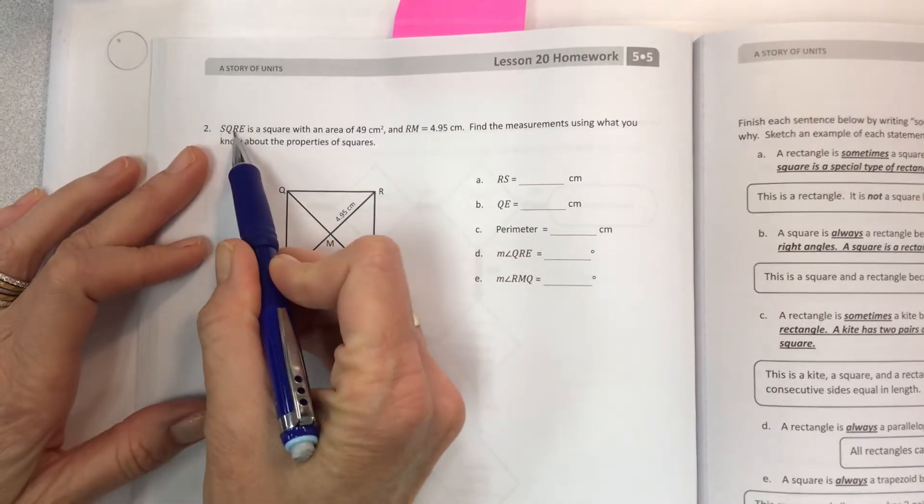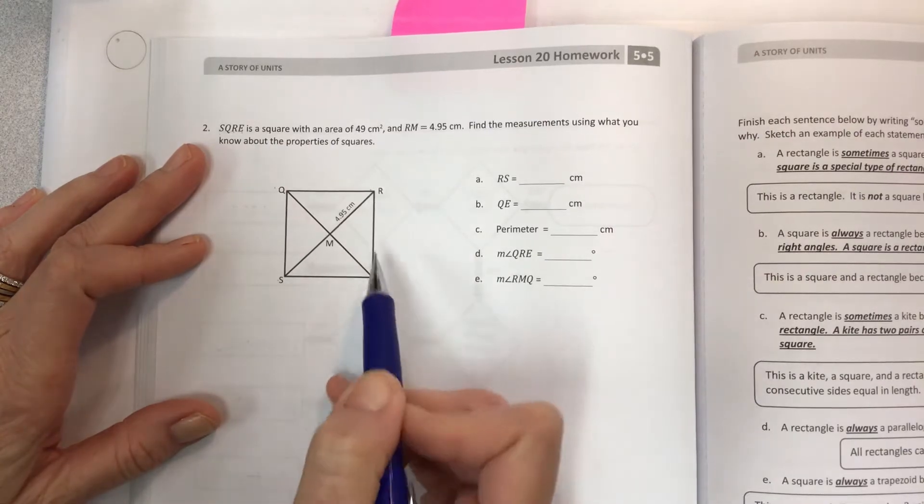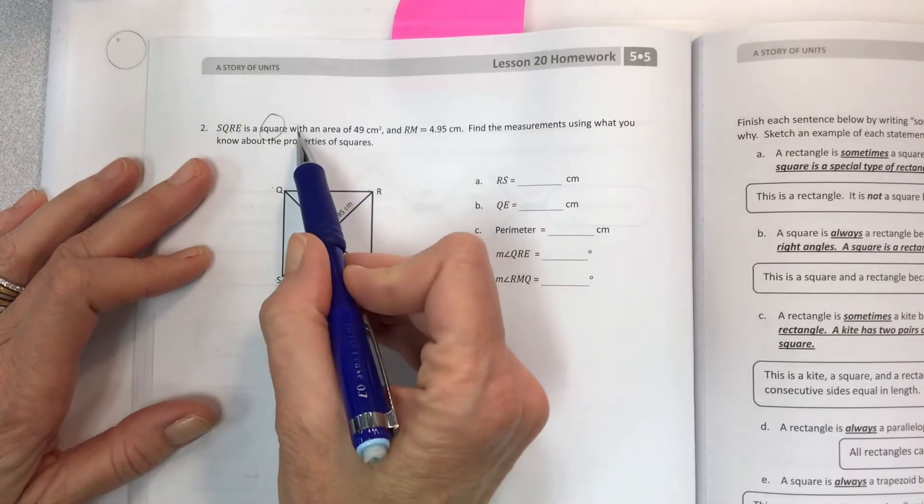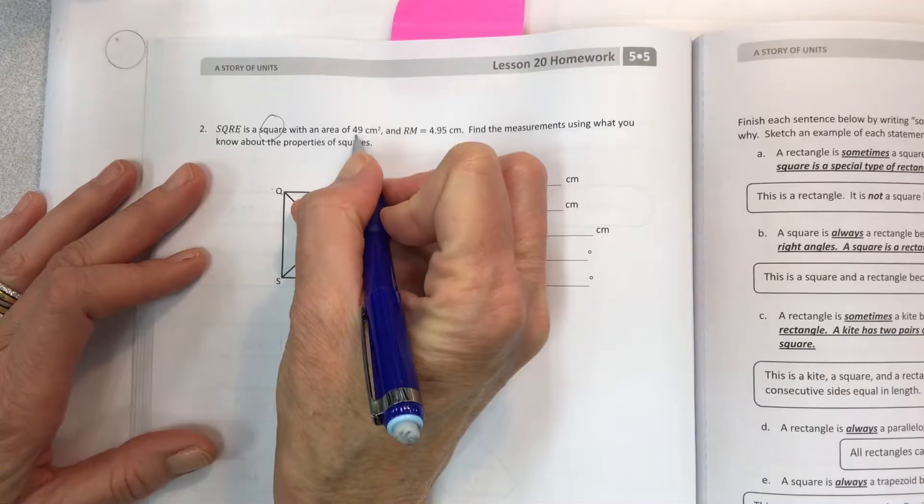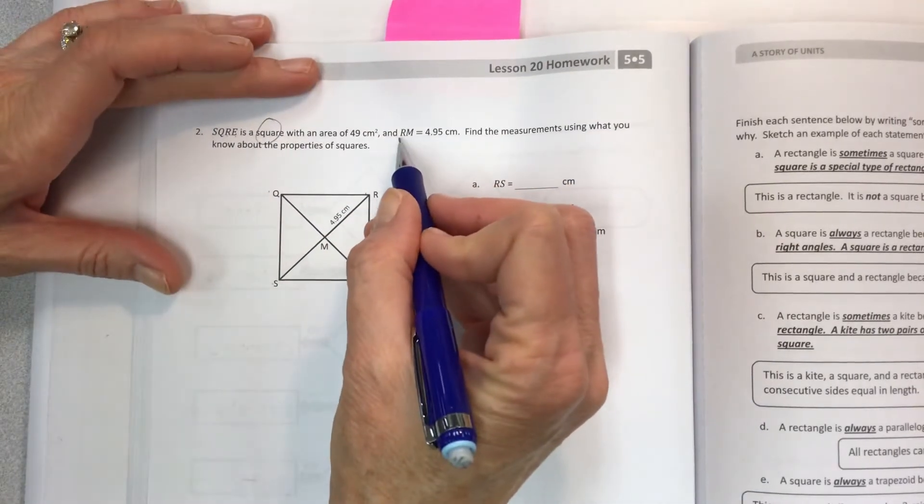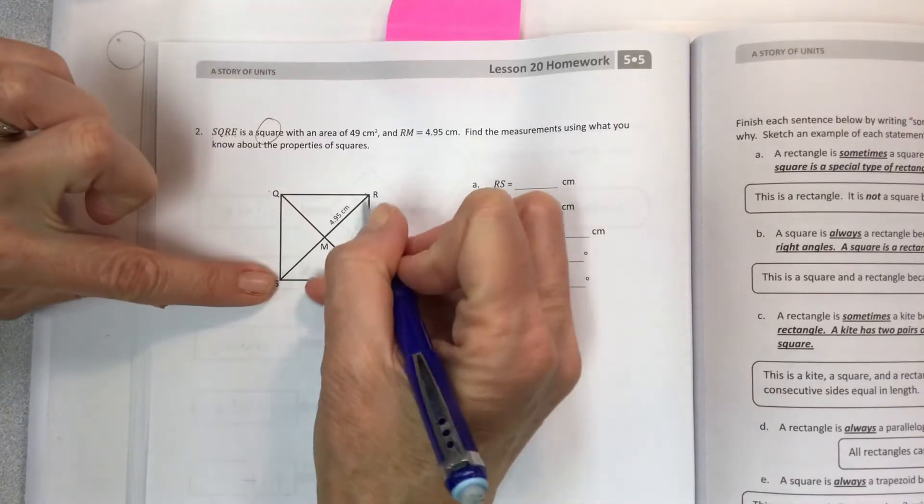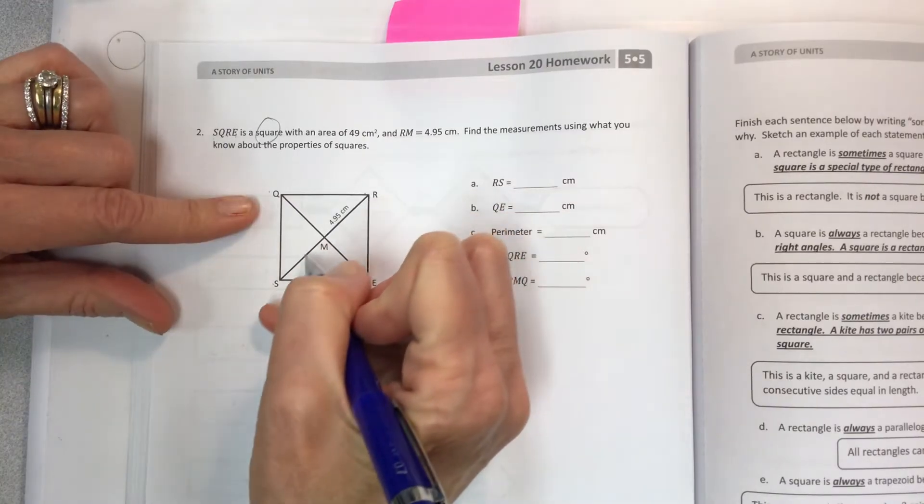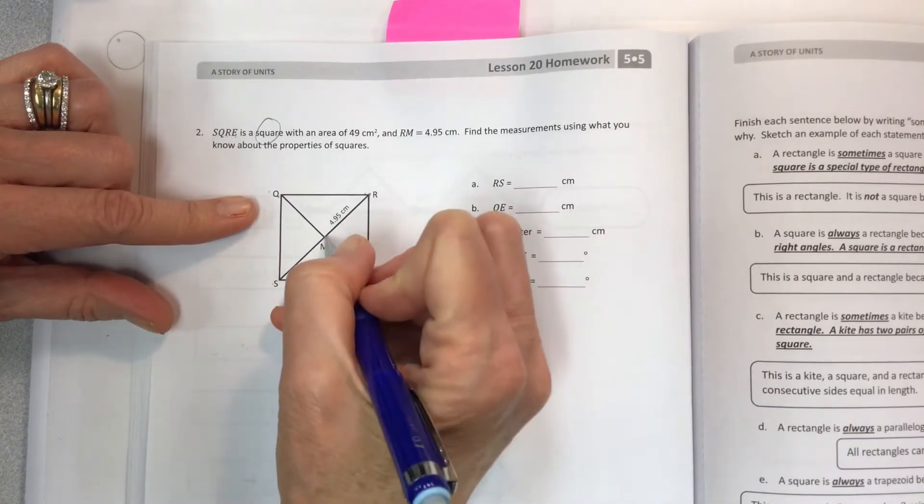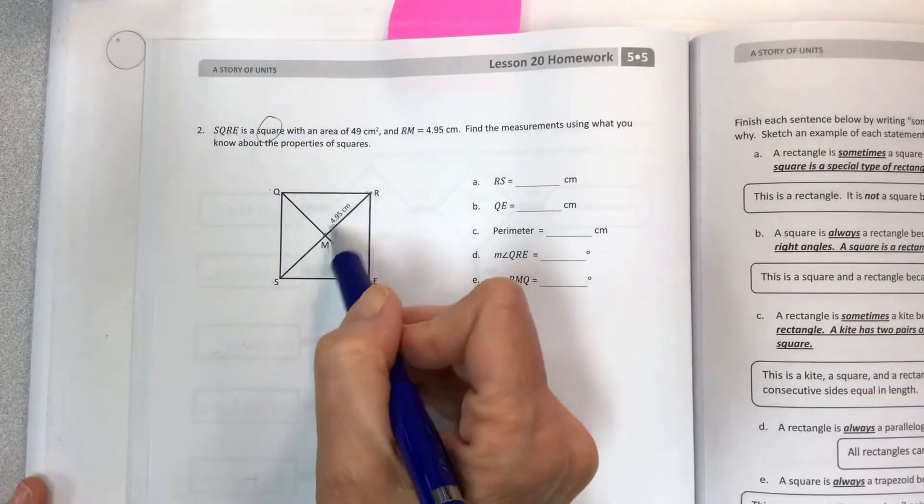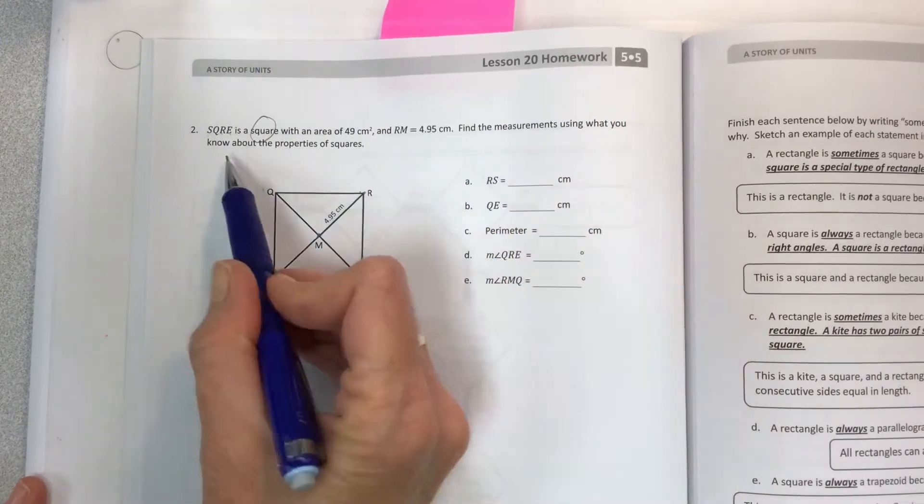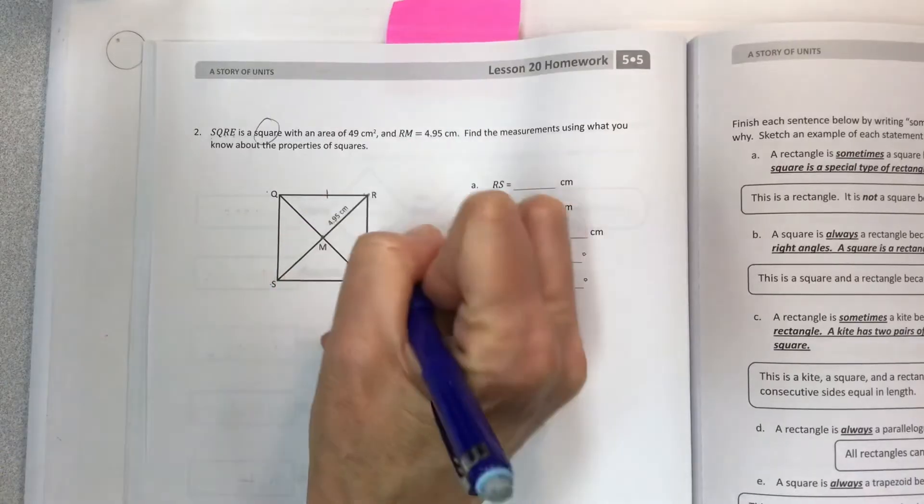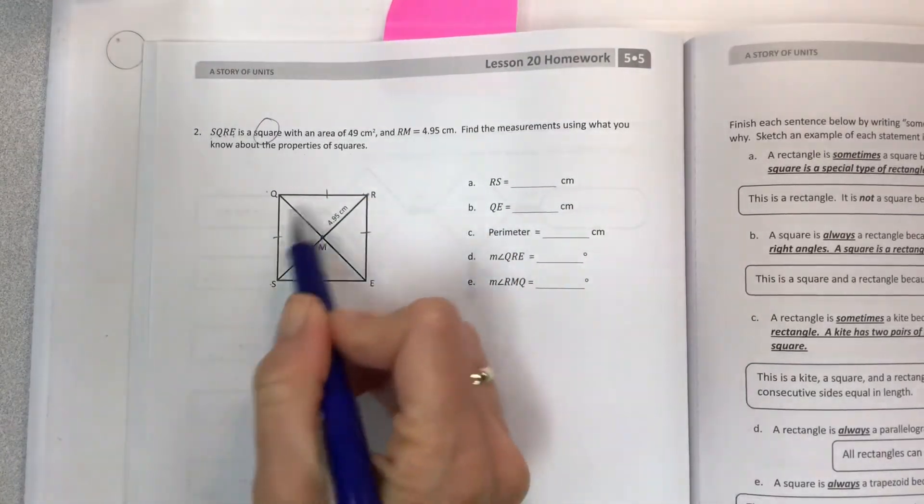SQRE going around is a square. If it's a square, it has all the attributes of a square. It's a square with an area of 49 centimeters squared and the length of RM is 4.95 centimeters. So this little segment here, it's on the diagonal but it's only this part here from here to here. So only that is 4.95. Find the measurements using what you know about the properties of squares. We know all about the angles, we know the four sides are the same length, and that's going to be kind of important when you're looking at the area.